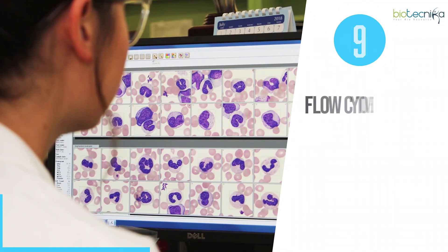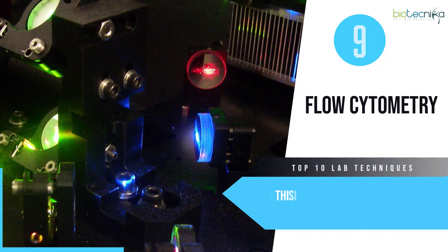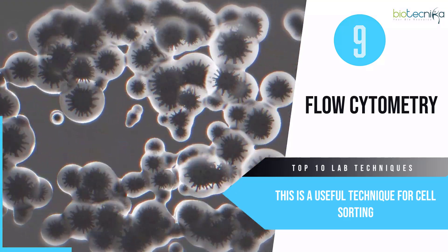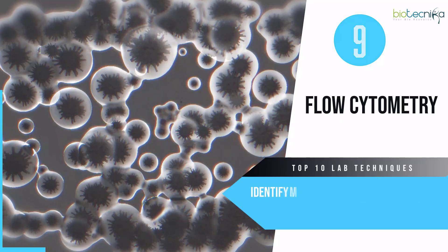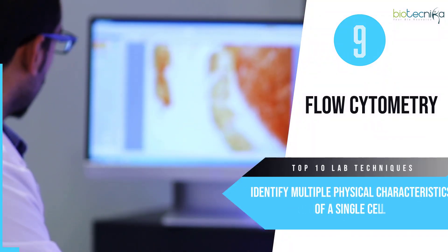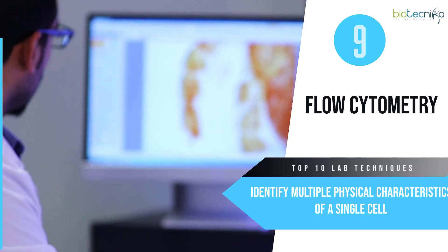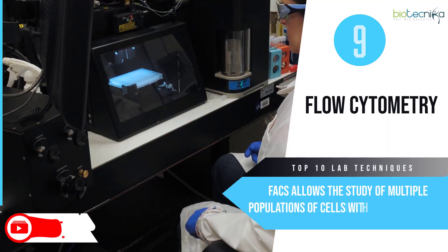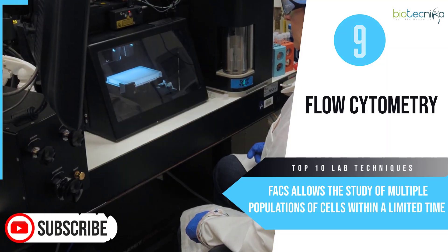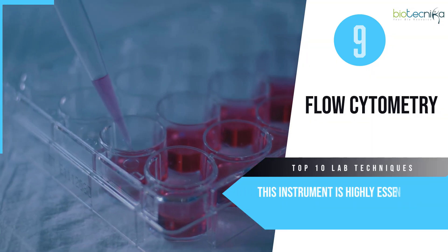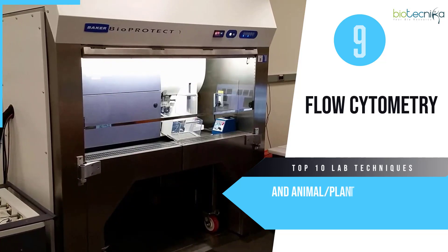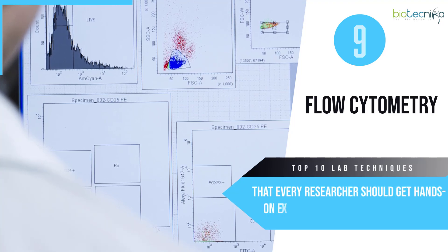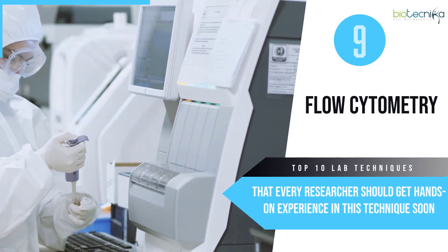9. Flow Cytometry. This is a useful technique for cell sorting — that is, separating different types of cells from a heterogeneous mixture and identifying multiple physical characteristics of a single cell. FACS allows the study of multiple populations of cells within a limited time. This instrument is highly essential for cell biology and animal or plant tissue culture laboratories, and every researcher should gain hands-on experience with this technique.